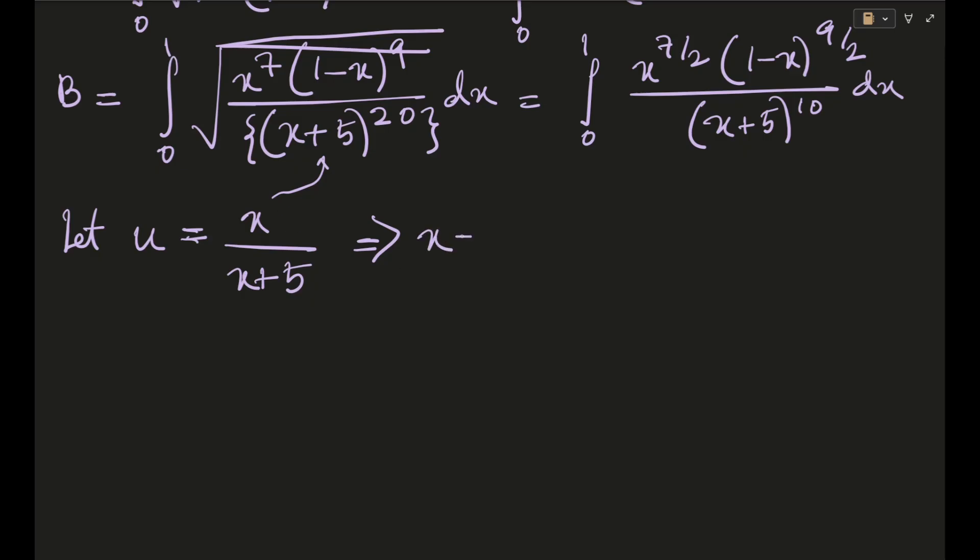Like I am going to solve this. Okay, so (x+5) into u is equal to x. Okay, so from here ux - x is equal to -5u. So basically x will turn out to be 5u/(1-u) multiplying both sides with minus.